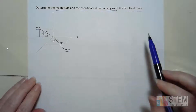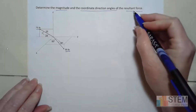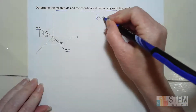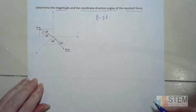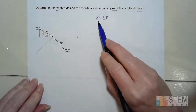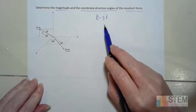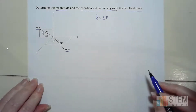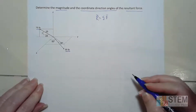Now, if I'm wanting to find the magnitude of the resultant force, remember what the resultant force is — the resultant is the sum of all the force vectors. So in order to get the resultant, I need to sum up the force vectors. Once I get all of that, then I can worry about these coordinate direction angles.